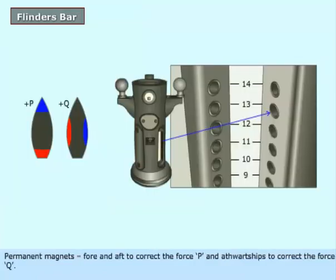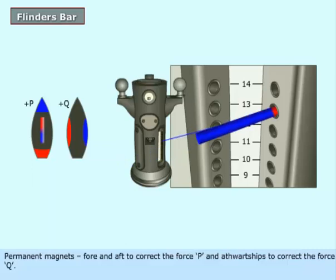Permanent magnets: fore and aft to correct the force P, and athwartships to correct the force Q.